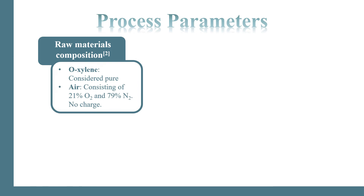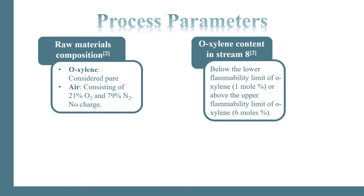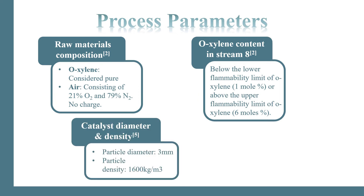For the raw materials, oxaline is considered pure, and air consists of 22% oxygen and 79% nitrogen with no charge. The oxaline content in the stream is below the lower flammability limit of oxaline, which is 1%, or above the upper flammability limit of oxaline, which is 6%. For the catalyst,